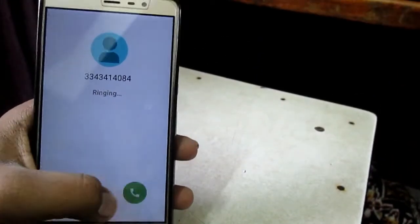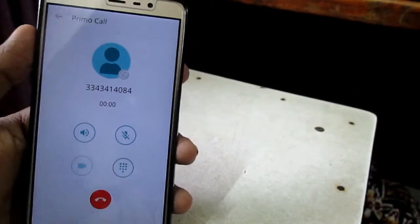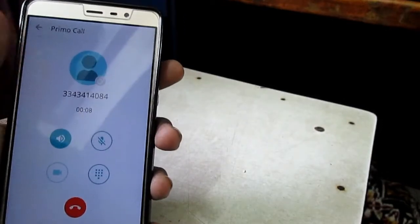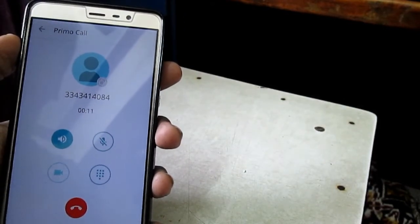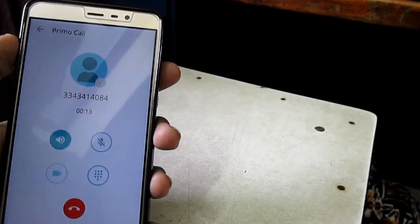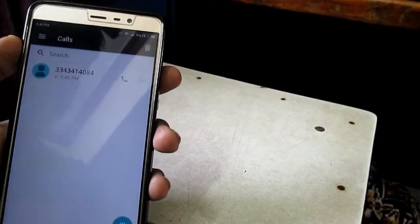Now you will receive a call on your Primo app and they will tell you the verification code. Just enter that code in WhatsApp.